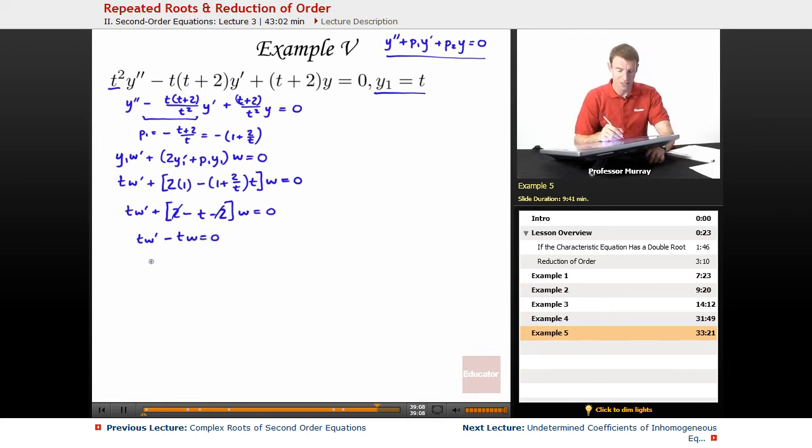I can divide by t, I'll get w prime minus w equals 0. I'm going to write w prime as dw by dt, and bring the w over to the other side, equals w. Now I'll multiply and divide. I'm separating the variables, setting up a separable differential equation. If you don't remember how to solve a separable differential equation, there's an earlier lecture on Educator in the differential equations series.